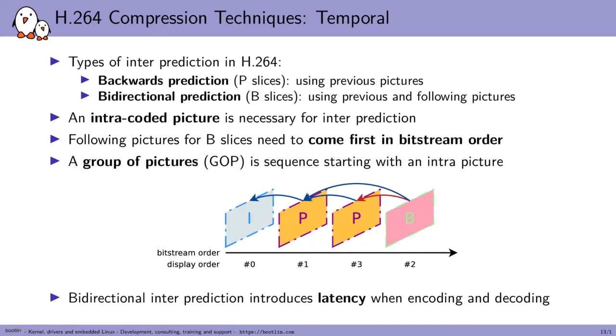There are two types of inter-frame prediction in H.264. The first is backward prediction, used in P-slices, which uses up to 16 previous pictures. The second is bi-directional prediction in B-slices, which uses previous pictures but can also use following pictures, which must be placed before the B-frame in bitstream order — so display order differs from bitstream order. An intra-coded picture must be present first. This sequence is called a group of pictures (GOP). Keep in mind that bi-directional inter-prediction creates latency because the bitstream must be reordered.